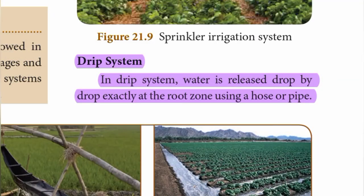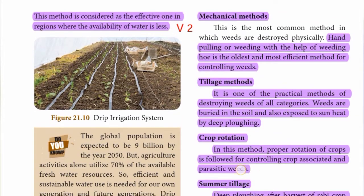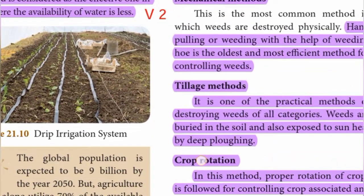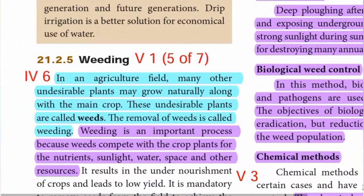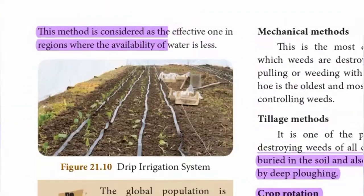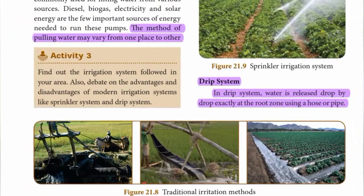Drip system: In the drip system, water is released drop by drop exactly at the root zone using a hose or pipe. This method is considered the most effective one in regions where the availability of water is less.